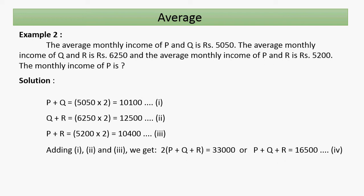The total of all three amounts is 10100 + 12500 + 10400 = 33000. Dividing by 2 gives the total income of P, Q, and R as 16500. Since Q and R together have a total income of 12500, we subtract: 16500 minus 12500.